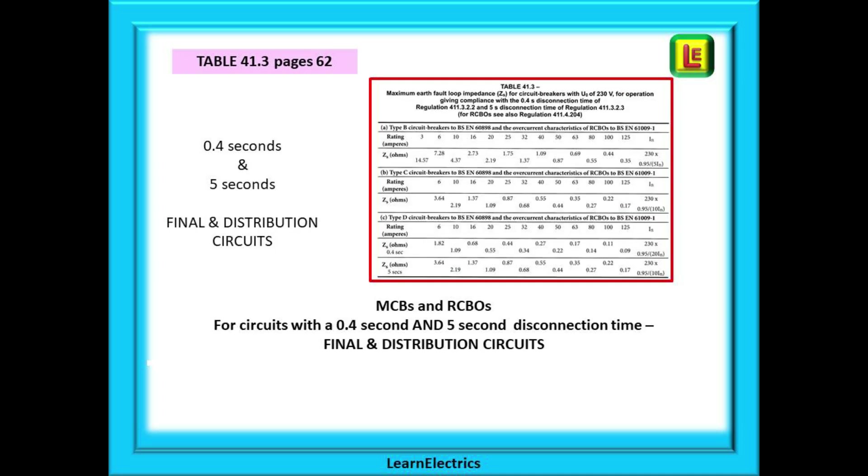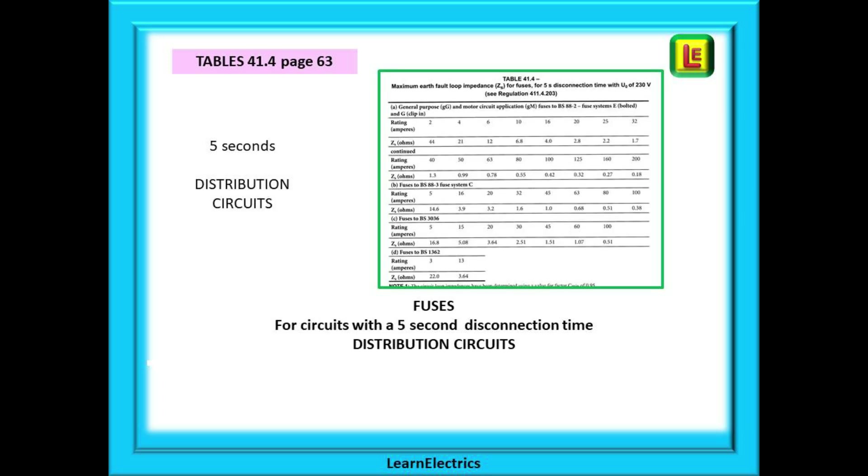On the next page is Table 41.3. This is for circuit breakers and RCBOs and it applies to both 0.4 second and five second disconnection times. So this table is for both final circuits and distribution circuits. And on page 63 is Table 41.4. Look at the title. This is for fuses with a disconnection time of five seconds. So it is for distribution circuits.